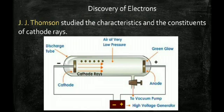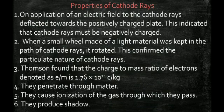The cathode is negatively charged and the anode is positively charged. Rays are observed that carry negative charge — these are called cathode rays. On application of an electric field, these rays deflect towards the positively charged plate, confirming they are negatively charged. When a small wheel is kept in their path it starts rotating, confirming their particulate nature. These rays also penetrate through matter placed in their path.